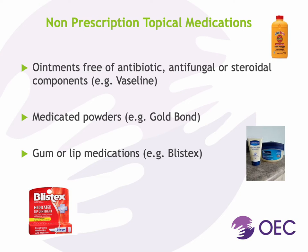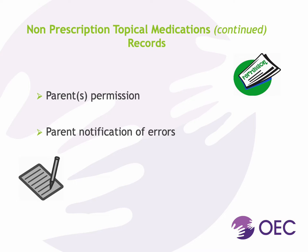Common types of non-prescription topical medications used in child care programs are ointments free of antibiotics, antifungal, and steroidal components, medicated powders, and gum and lip medications. Before administering any non-prescription topical medication, written parental permission must be obtained and shall be kept on file at the child care program. Parental permission must include a statement indicating that the medication has been previously administered without adversely affecting the child. Should a medication error occur, the parent shall be immediately notified. Written notification shall also be sent to the parent within 72 hours of the error, and such error shall be documented in the child's health record.